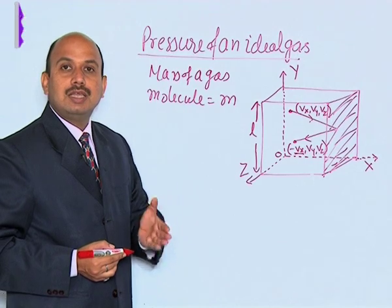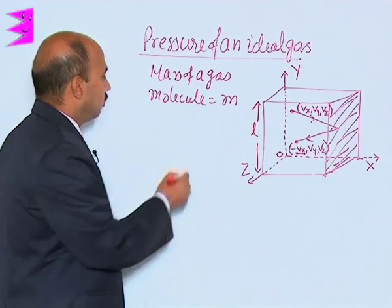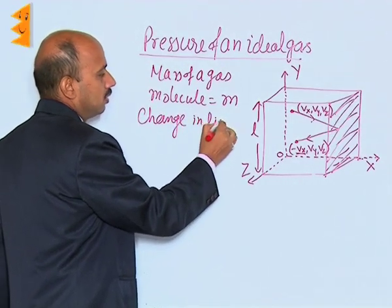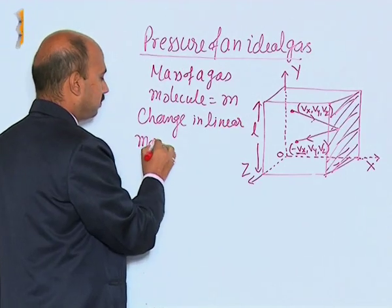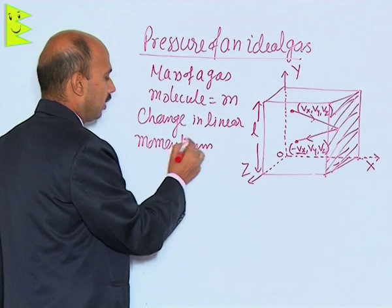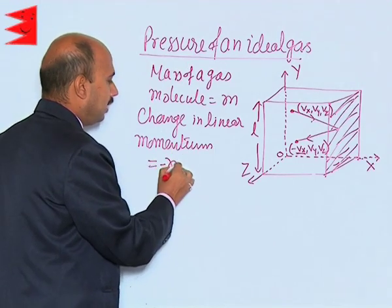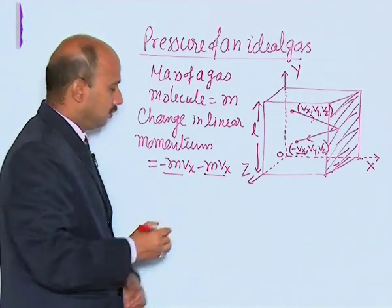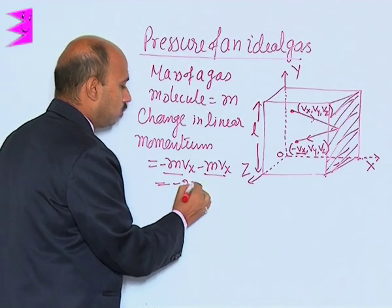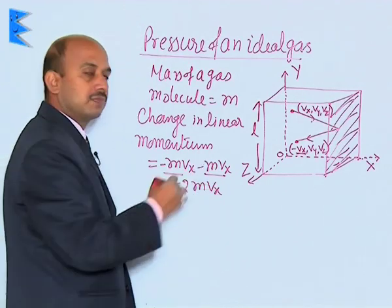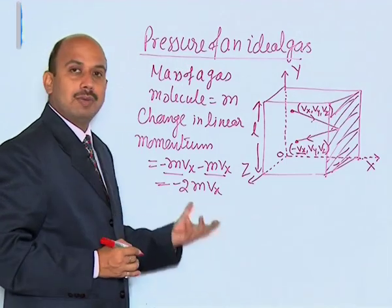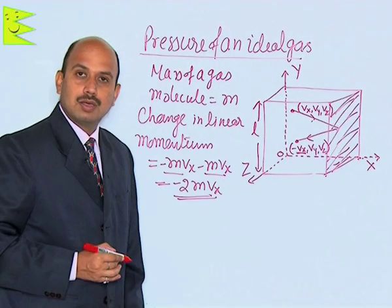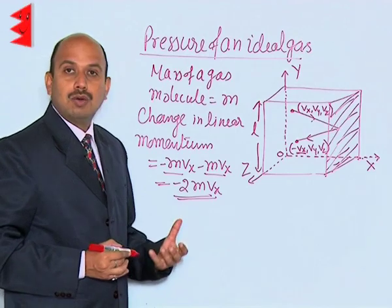We can calculate the change in linear momentum in one collision. The change in linear momentum is equal to final momentum minus initial momentum: (−mVx) − (mVx) = −2mVx. So the magnitude of the change in momentum in one collision is 2mVx.